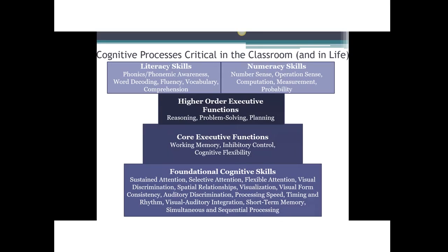Now we shift to look at specific cognitive functions and connect them to academic performance. This chart describes cognitive skills. At the bottom are foundational cognitive skills — things like attention, visual processing, processing speed, short-term memory, and simultaneous and sequential processing. These are the basic ways we get information into our brains from the outside world. They function at a non-conscious level, and if they are functioning effectively, we are in good shape to start the learning process; if not, we will have issues at that very first step.